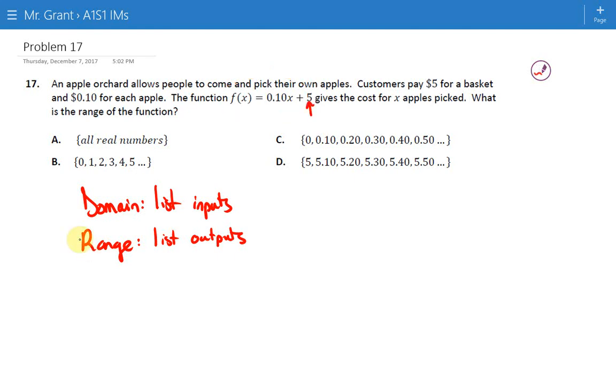Well, breaking this down, this is the $5 you paid for a basket. Here's $0.10, and it's $0.10 for each apple. I think logically that would make X your number of apples. And then our answer, after we do all that math, this is going to be the total cost that we spent.